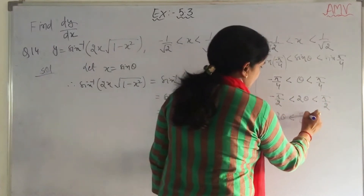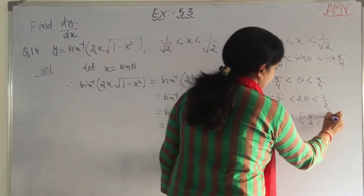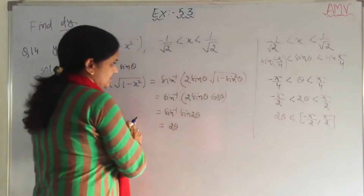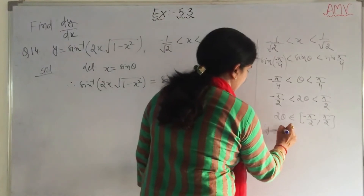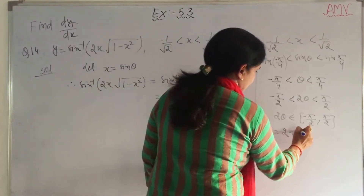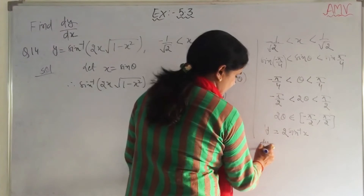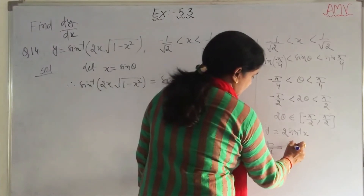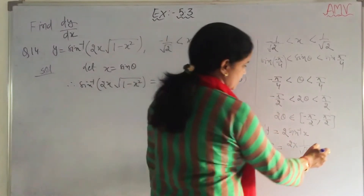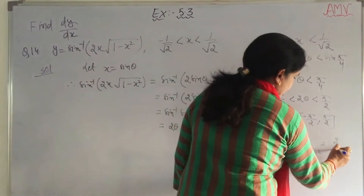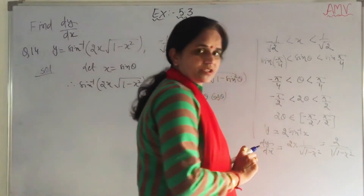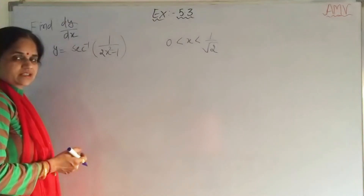So 2 theta belongs to (minus pi by 2, pi by 2), which is the range of the sin inverse function. Therefore y equals 2 theta, and the value of theta is sin inverse x. So y equals 2 sin inverse x. Differentiating with respect to x, dy by dx equals 2 times (1 over under root 1 minus x square). So the final answer is 2 by under root (1 minus x square).